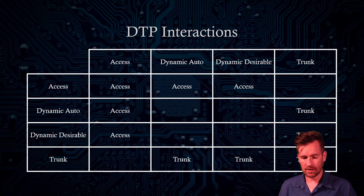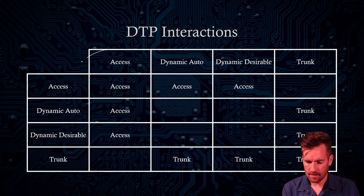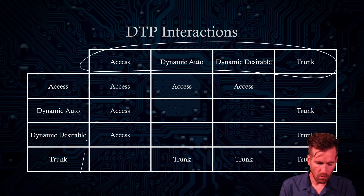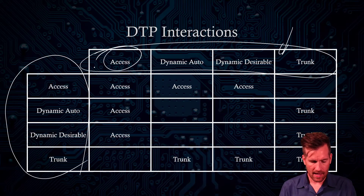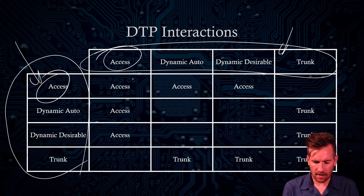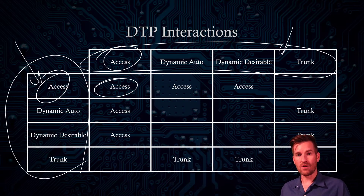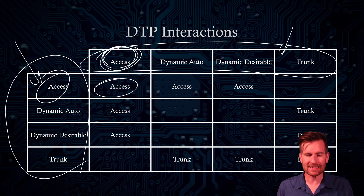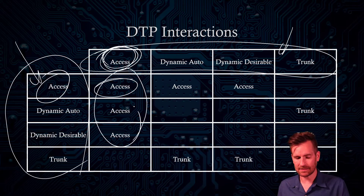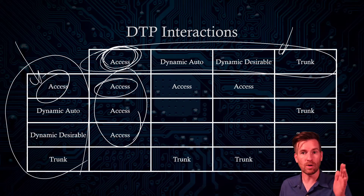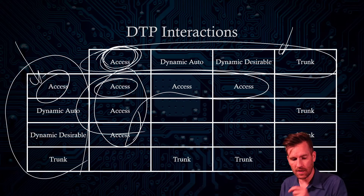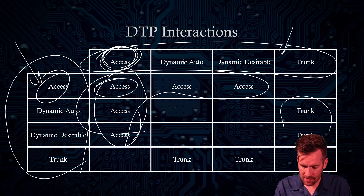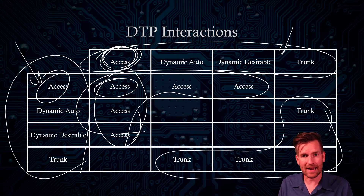Let's take a look at what those interactions look like. Across the top is representing the settings for a switch port on one switch, and the ones on the left represent the settings on the other switch. If switch one is set to access and switch two is set to access, they will create an access port together. Most of these combinations are self-explanatory: if one side is set as an access port, it will try to be an access port regardless of whether the other side is access or a dynamic setting. Similarly, if either switch is set to trunk, it will become a trunk port when connecting to another trunk port or to one of the dynamic setting ports.